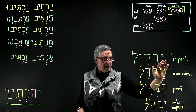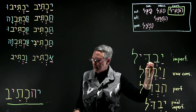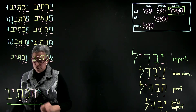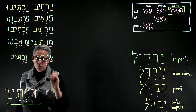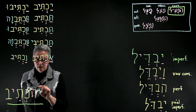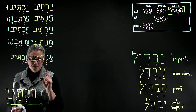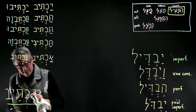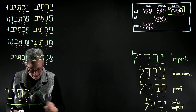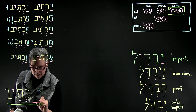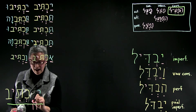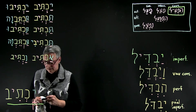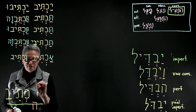One way to think about this patach under the prefix is to envision what the word would look like if the he was still there. You see the he, which is a weak letter and a visual sign of the Hi-feel. If you think of the yod — the prefix, the third masculine singular prefix — as a hammer that pounds the he down into the ground until all you see is the top, that's one way to think of the patach.